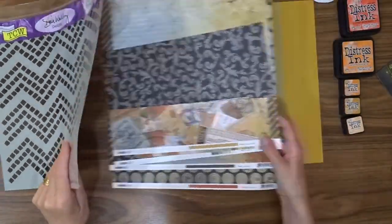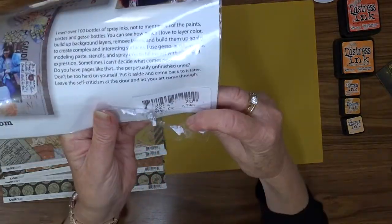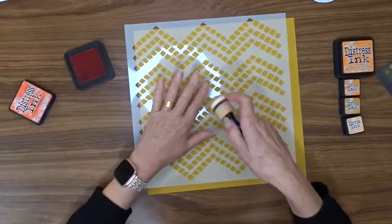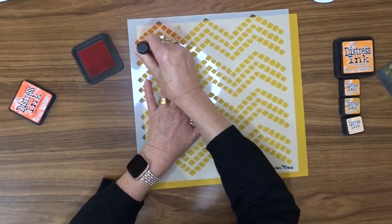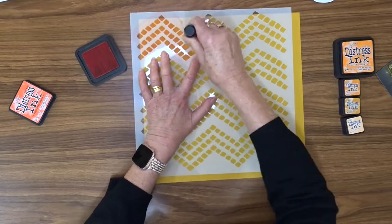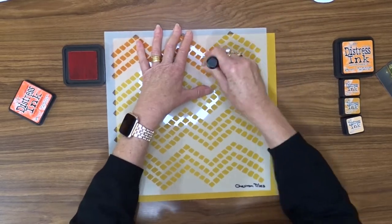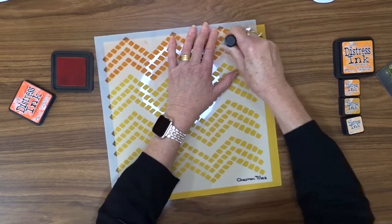I'm also going to use a Crafter's Workshop stencil called Chevron Tile. I'm going to use my Distress Ink in Ripe Persimmon and my Domed Blending Tool to apply the ink through the stencil onto the background. I'm going to do that so it completely covers my whole yellow cardstock.